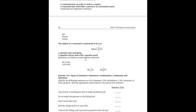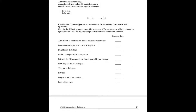A question asks something and always ends with a question mark. Questions are known as interrogative sentences. For example: 'He is late' versus 'Is he late?' The verb 'is' appears in both — who or what is? He. Even in the question, the verb sometimes comes first.